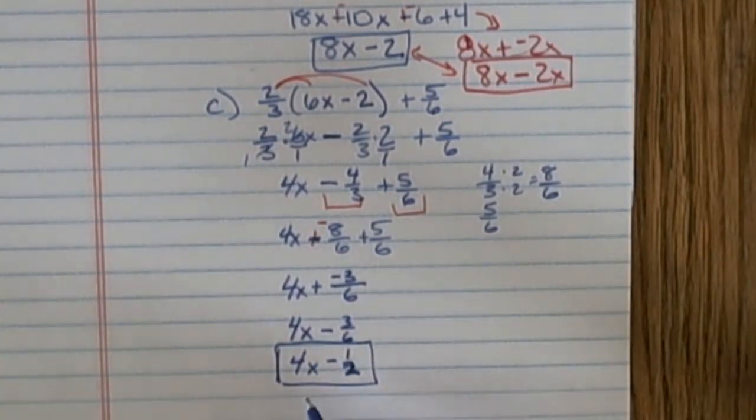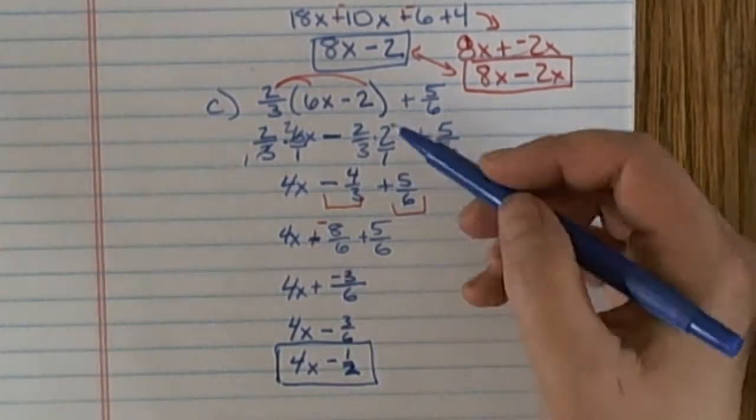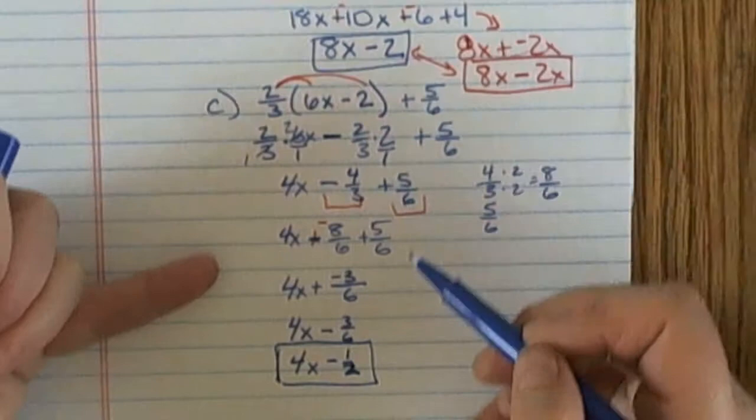So those are all examples of simplifying algebraic expressions. As you'll see, when we get to the end, there's still no equal sign. I haven't solved for x, but I've made it look simpler, with fewer terms than when I started.